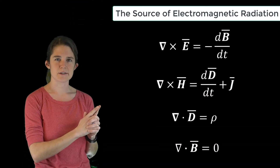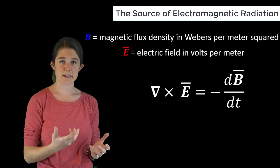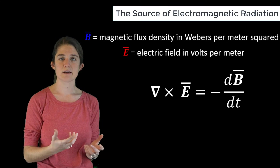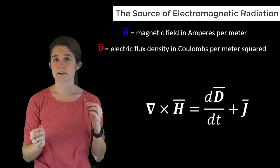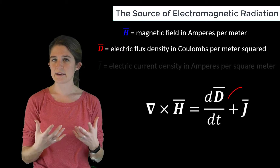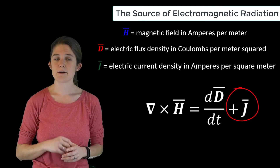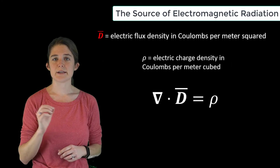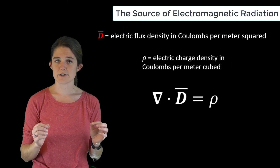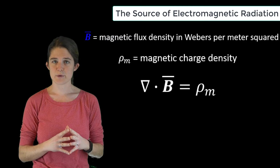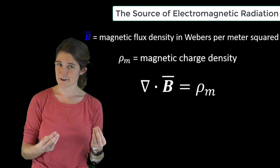These are Maxwell's equations: Faraday's law, which relates electric and magnetic fields; Ampere's law, which also relates electric and magnetic fields but with an added term to account for the possible presence of a current; Gauss's law, which relates an electric field to a static electric charge; and the solenoidal law, which relates a magnetic field to static magnetic charge.